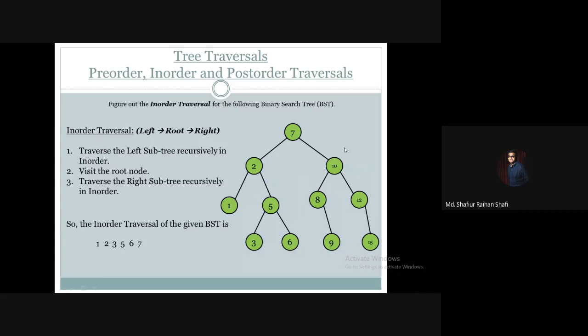Now we apply the same in-order process to the right subtree. The right subtree root is 10. Node 10 has left children 8 and 9, and right children 12 and 15. So at first we have to traverse 8 and 9, since 8 is the left subtree root of 10.